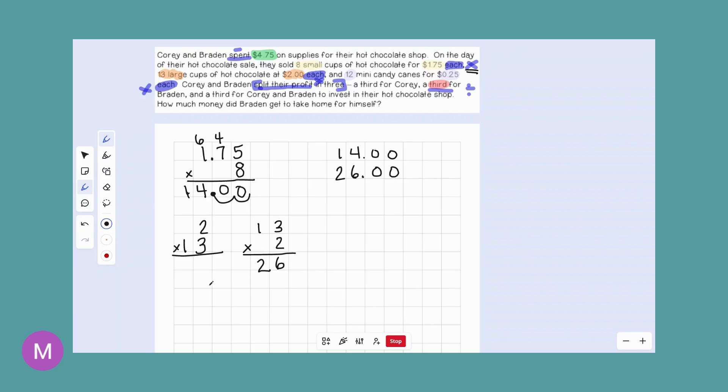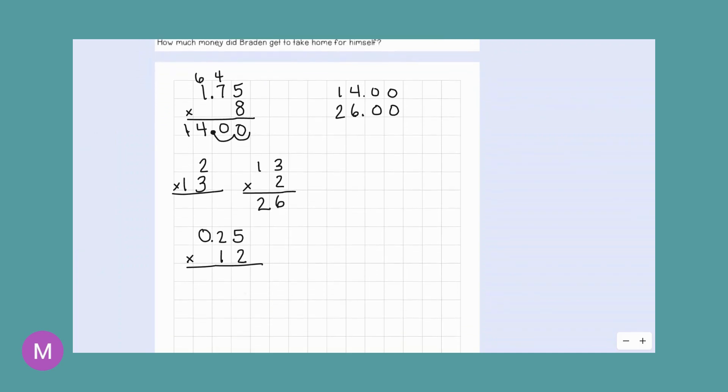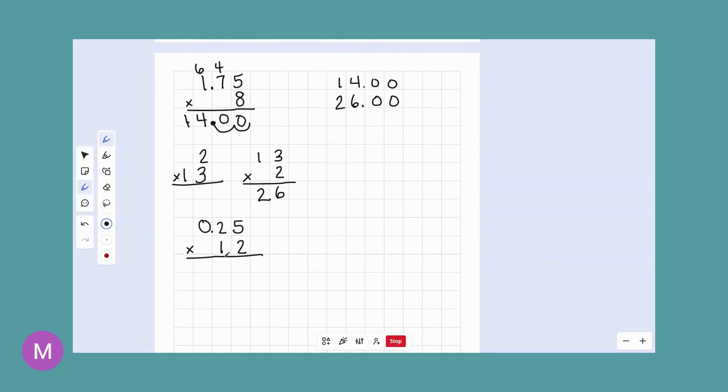They also sold candy canes for 25 cents each. And they sell 12 of them. Now, if you're good at mental math, you might be looking at this and saying, okay, $0.25 stands for a quarter. So what's a quarter of 12? And you can be doing that mental math there, but I'm going to go ahead and practice our multiplication with decimals and the two digit place value at the bottom. So we're going to start with our two times everything, and then we're going to go to our one times everything. I'm going to switch some colors up a little bit.